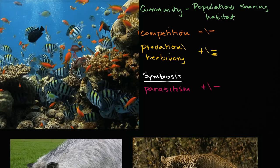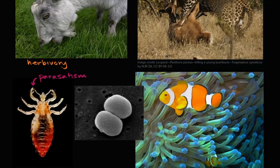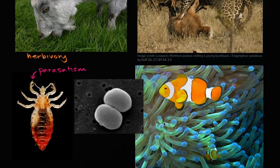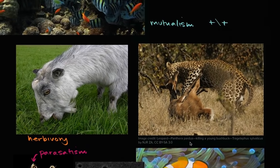Another situation is where it benefits both sides — that is called mutualism. This is where both species benefit. Oftentimes when people talk about symbiosis, they're really talking about mutualism, which is a specific type where both organisms benefit. This is an example of mutualism: a clownfish living within a sea anemone. The sea anemone provides the clownfish shelter, while the clownfish keeps away other fish that might eat the sea anemone. So they are both benefiting from that interaction.